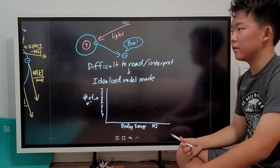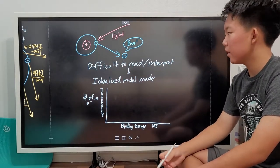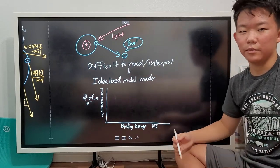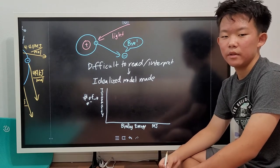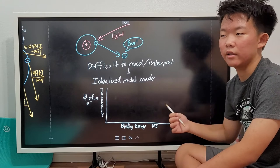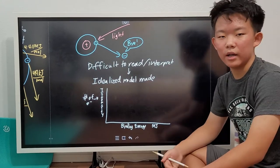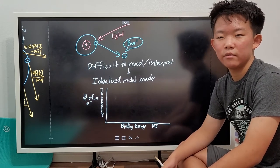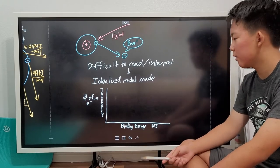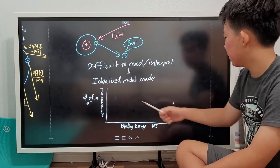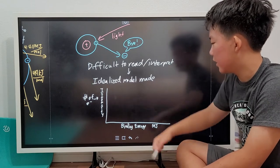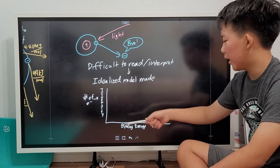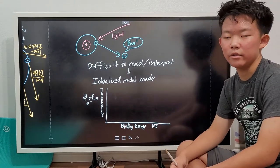This now is photoelectron spectroscopy. It's basically just applying light to an electron so that it can knock it off the orbitals. The binding energy is the amount of energy the light needs in order to knock the electron off. Now most of the time, the actual data you get is extremely complex. So as usual, we developed an idealized model, which is something like this. The y-coordinate is the intensity, which is, in other words, the number of electrons the shell has. And this x-coordinate is the binding energy in terms of megajoules.